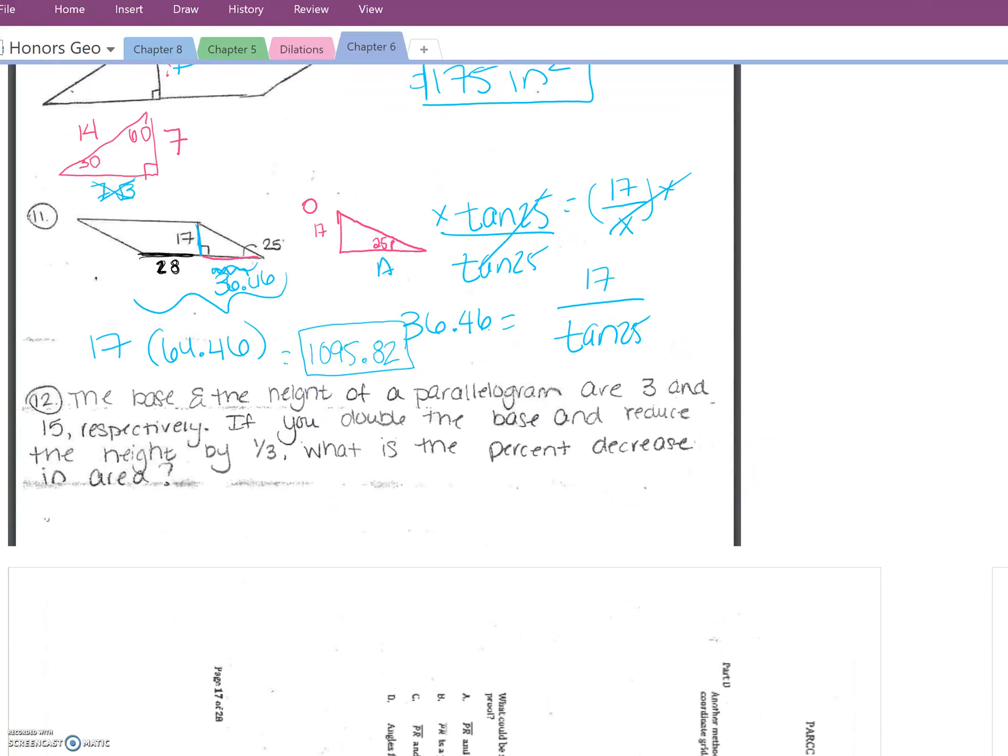Very last one. It says the base and the height of a parallelogram are 3 and 15 respectively. So originally you have a parallelogram where the base and the height are 3 and 15 respectively. So it's actually a tall parallelogram, and I know that because respectively just means in the order that I gave you the information. So the base is 3 and the height is 15. So it's actually taller than it is longer. So the base is 3, the height is 15.